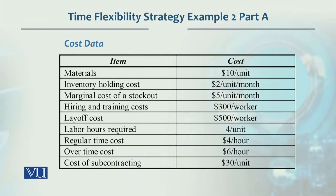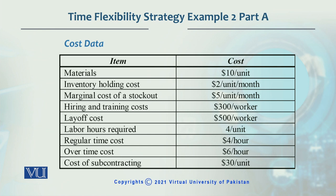The cost data given is: material cost per unit is $10, inventory holding cost is $2 per unit per month, stock-out cost is $5, hiring and training cost is $300 per worker, lay-off cost is $500 per worker, labor hours required are 4 per unit, regular time cost is $4 per hour, overtime cost is $6 per hour, and sub-contracting cost is $30 per unit. Note that stock-out cost will not be utilized because back ordering or stock-out is not allowed in this case, but the remaining costs will be used.